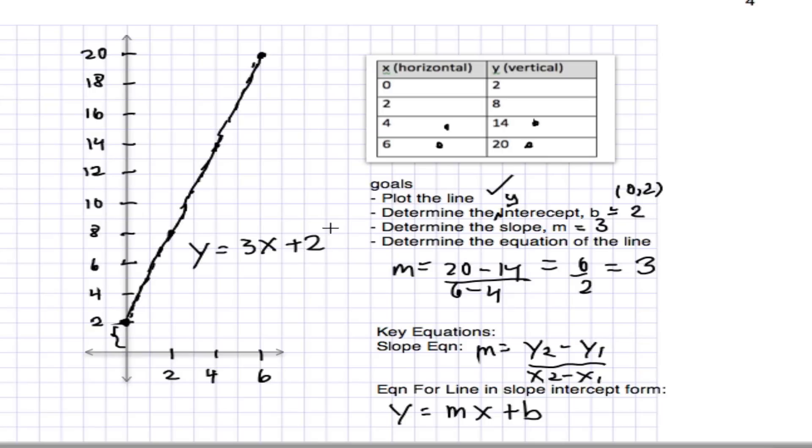So this particular line has the equation y equals 3x plus 2. The ability to go from charts to graphs to equations calculating slope and intercept is going to be a key skill when we do work with constant velocity graphs.